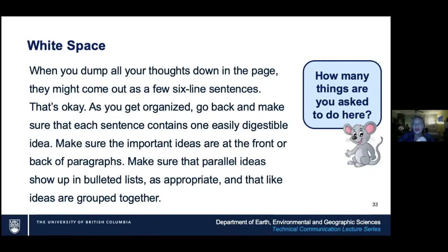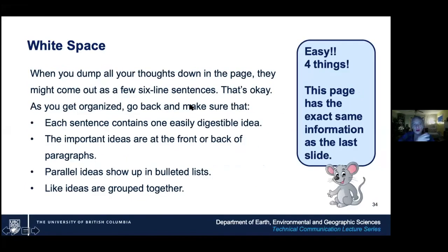When you look at a paragraph, how many things are you asked to do? You have to start reading through it to find out. But if we use a bulleted list — easy, four things. As you get organized, make sure each sentence contains one idea, important ideas are at the front and back of paragraphs, parallel ideas show up in bulleted lists, and like ideas are grouped together.